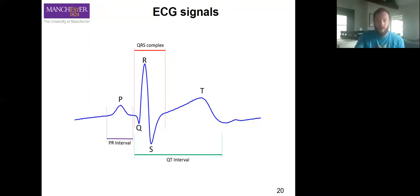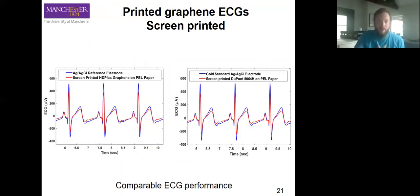If we compare printed graphene ECGs, these are all screen printed. Our blue lines on both of these are the silver silver chloride commercial reference electrode. On the left we see screen printed HD Plus graphene. On the right we see Dupont 5064H, which is silver. We see comparable ECG performance here. Nothing particularly stands out either way.